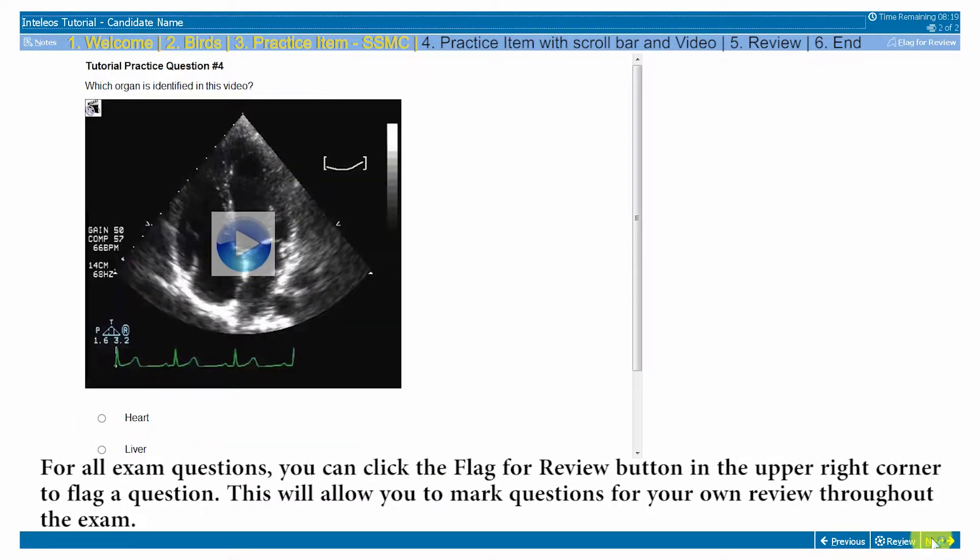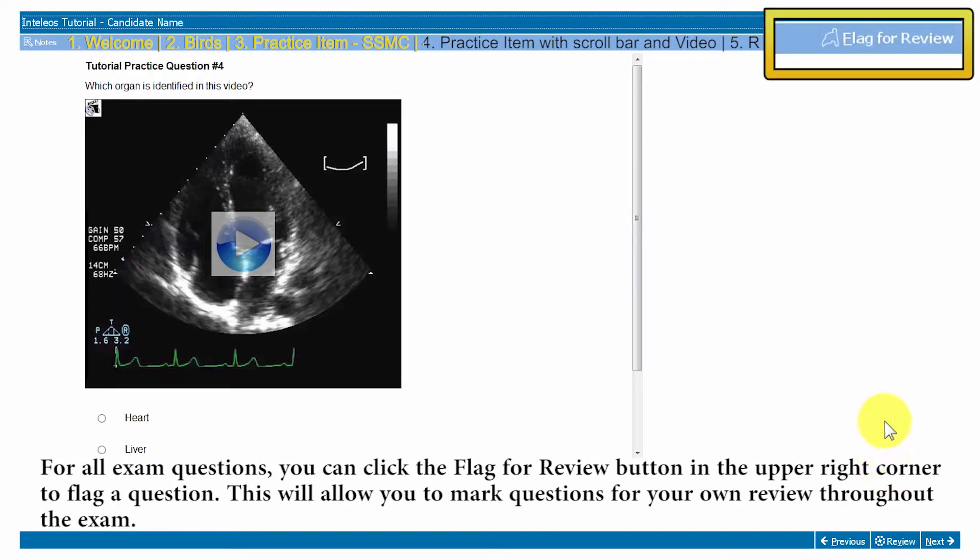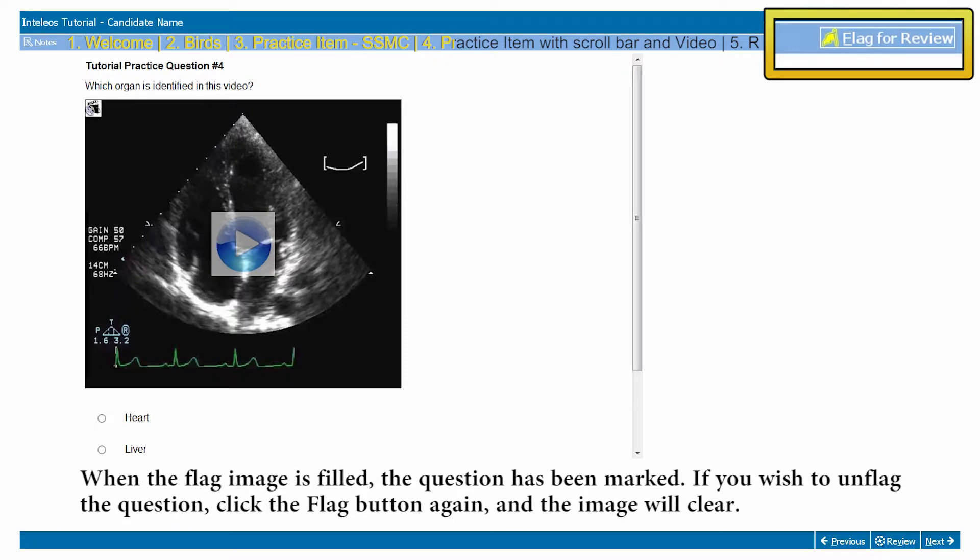For all exam questions, you can click the flag for review button in the upper right corner to flag a question. This will allow you to mark questions for your own review throughout the exam. When the flag image is filled, the question has been marked. If you wish to unflag the question, click the flag button again and the image will clear.